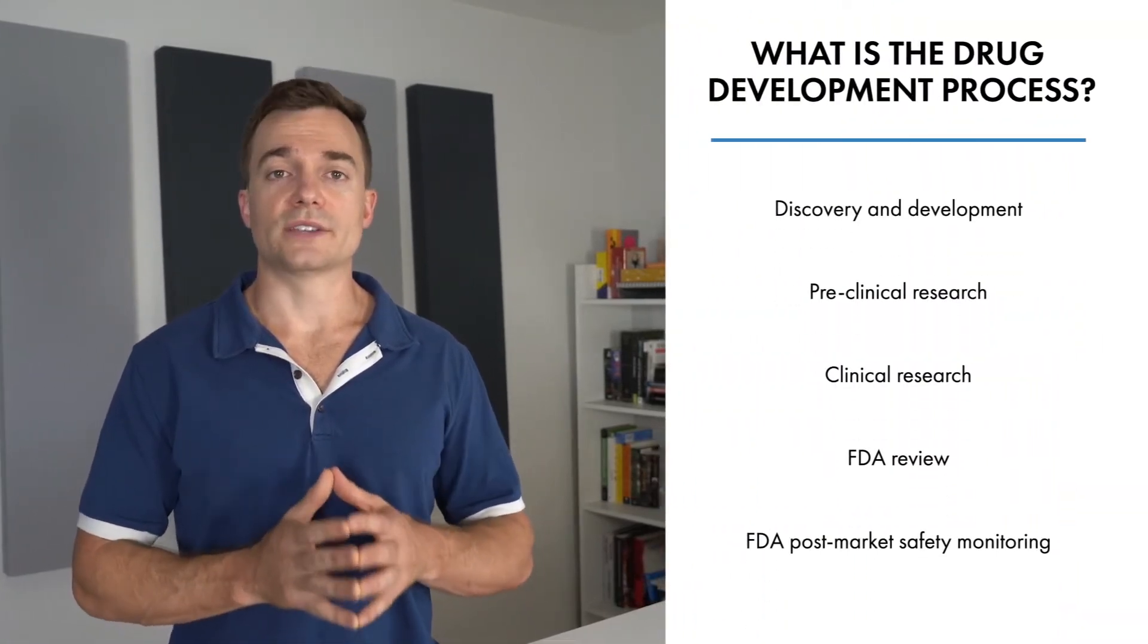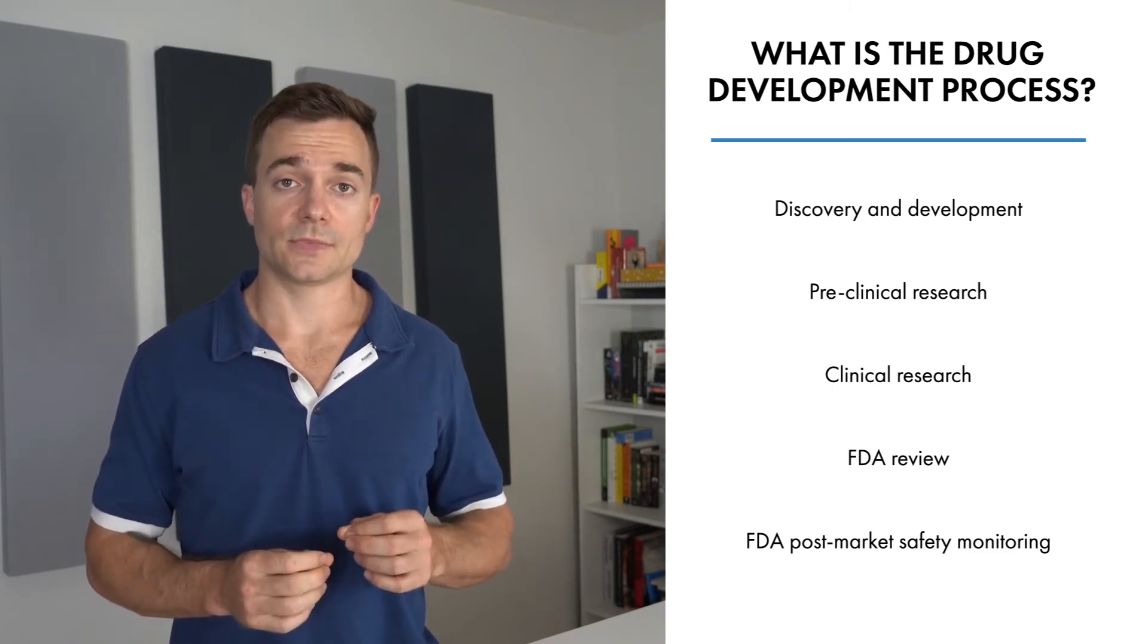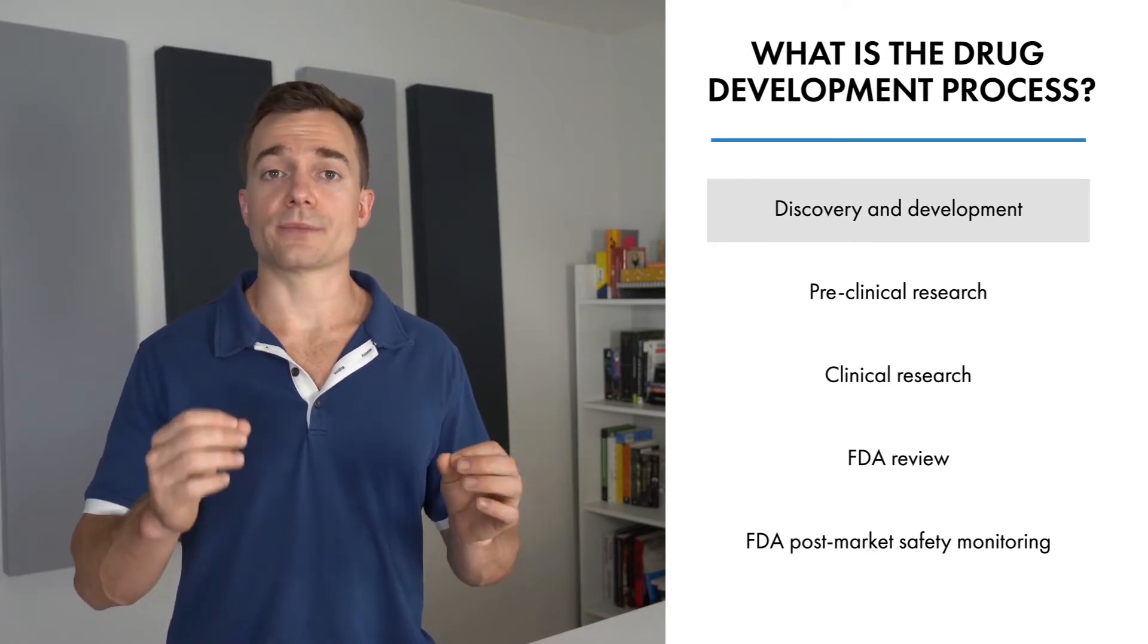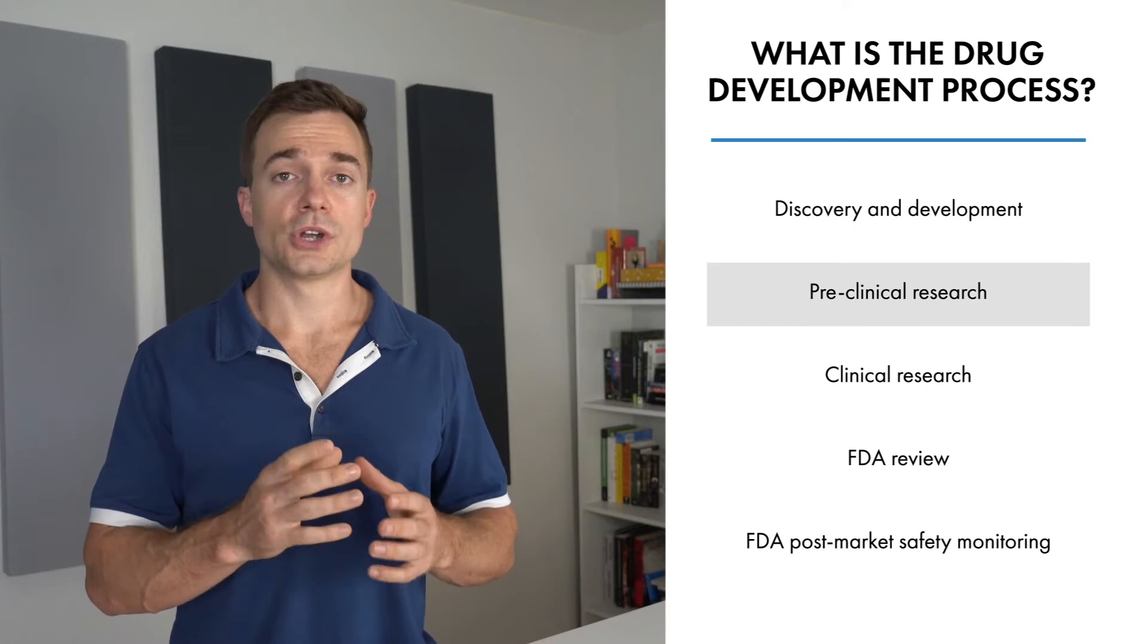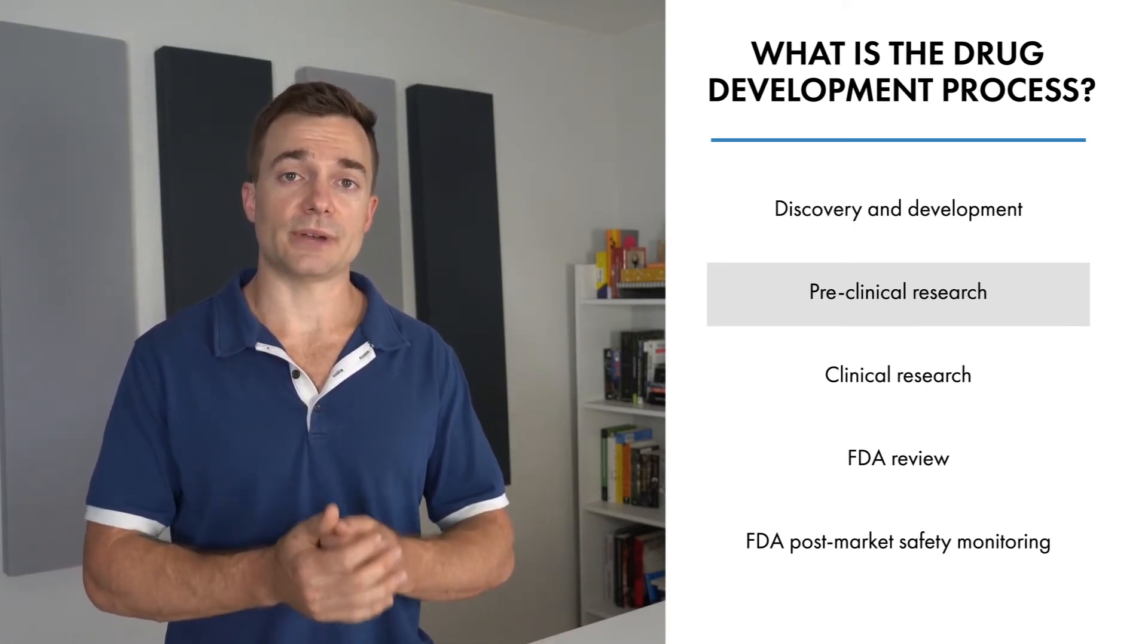The fourth question: what is the drug development process? Each country has its own drug development process. The one in the U.S. is as follows. First, you have discovery and development, where research for a new drug begins in the laboratory. Then we have preclinical research, where drugs undergo laboratory and animal testing to answer basic questions about safety.